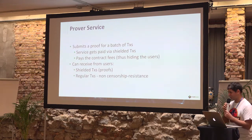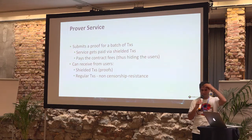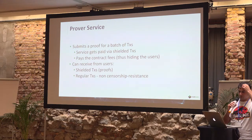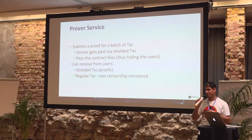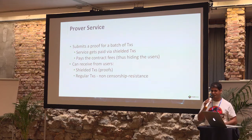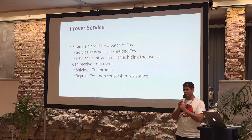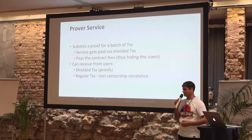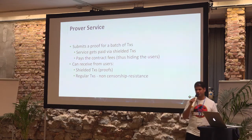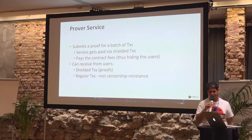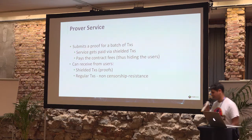We introduced the prover service. The idea is that the prover service — it can be a few of them, it doesn't have to be one — knows how to submit proof for a batch of transactions. Users send their shielded transactions, the prover node sees them, and batches those shielded transactions together. The prover node pays to send one proof on-chain but can be paid separately for every transaction. It takes all 100 proofs in the batch and creates from all those 100 proofs one proof approximately the same length. In the cost of a little bit more than one shielded transaction, you can now send 100 shielded transactions.